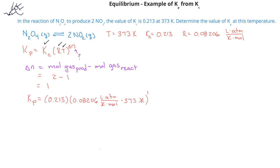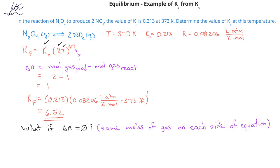When we plug these values into the equation, Kp equals Kc times RT to the first power, we find that the value of Kp for this reaction at 373 Kelvin is 6.52. As a side note, if there were no change in the moles of gas between reactant and product, delta n would be 0. Since anything raised to the zero power is 1, RT raised to the zero power equals 1, and in those situations where there are equal moles of gas on each side of the equation, Kp will equal Kc.